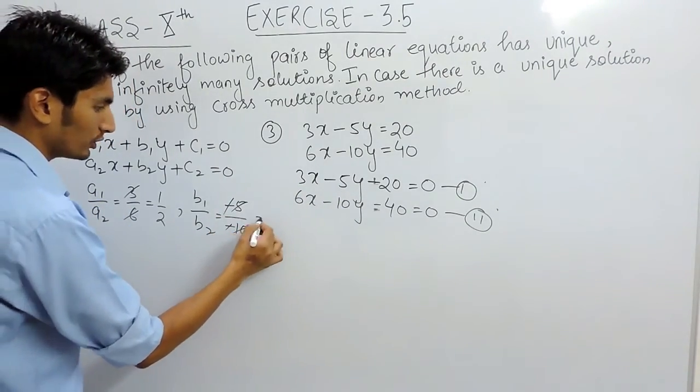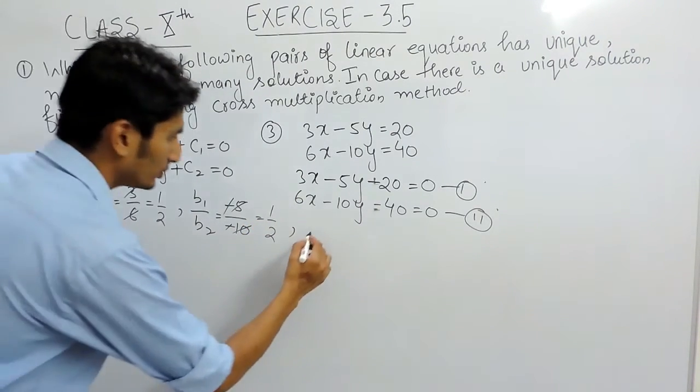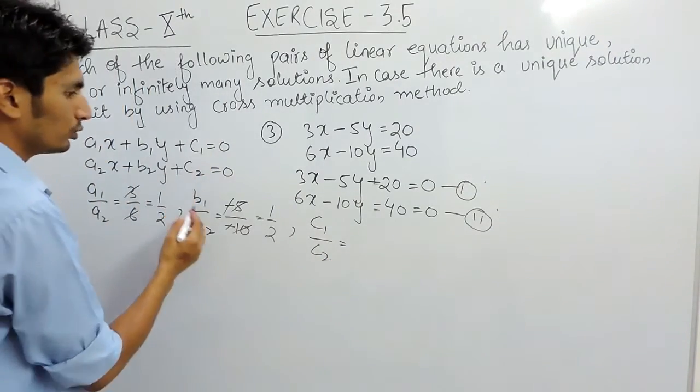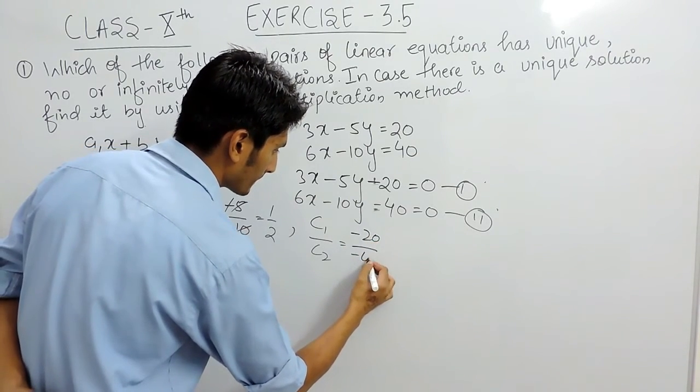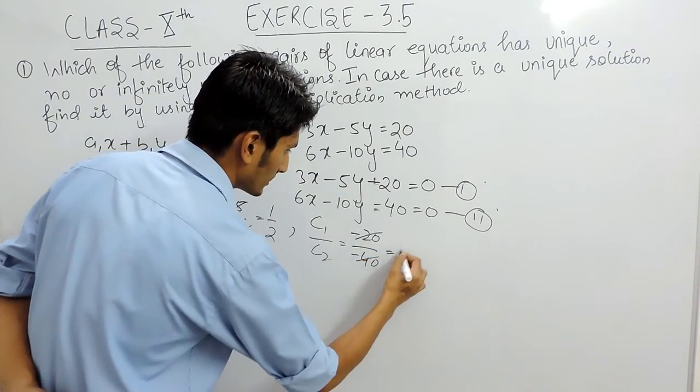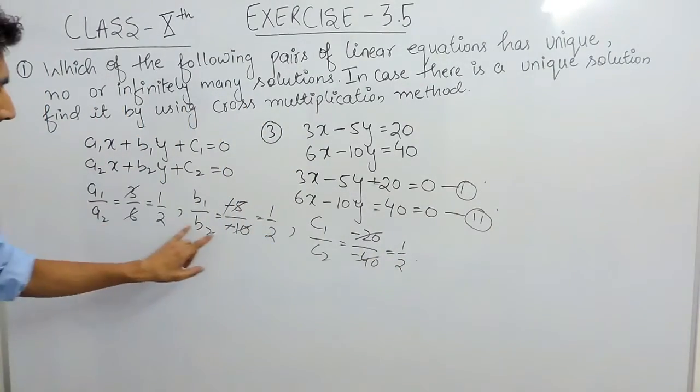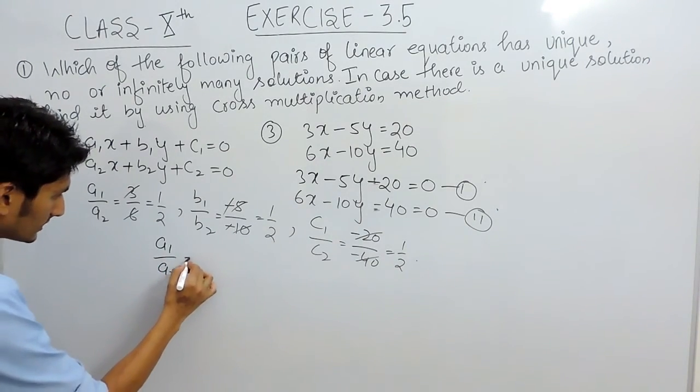Similarly, find the ratio between c1 and c2, which are the constant coefficients. This is again equals to 1 by 2.